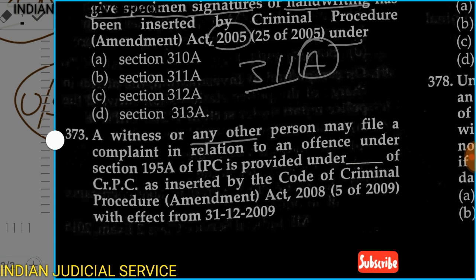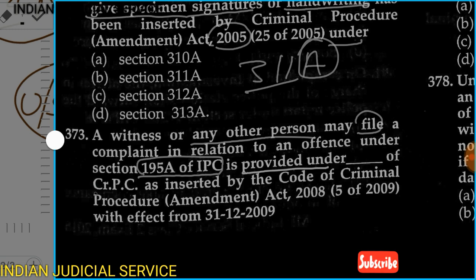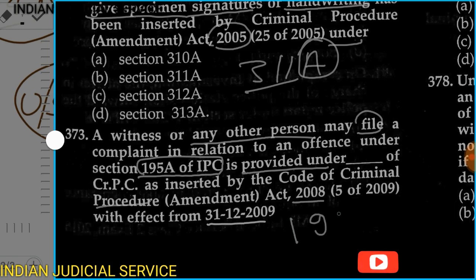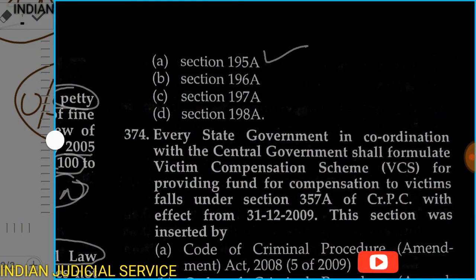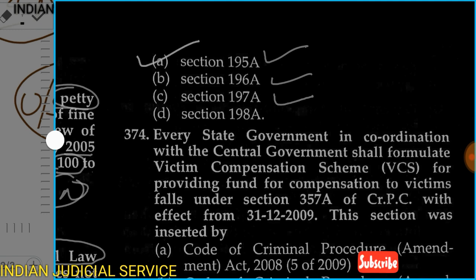Question 373: A witness or any other person may file a complaint in relation to an offense under Section 195 IPC, as provided under which section of CrPC, as inserted by the Code of Criminal Procedure Amendment Act 2008, effective from 31st December 2009? Options: 195A, 196A, 197A, or 198A. The answer is Section 195A.